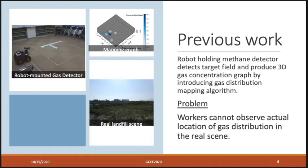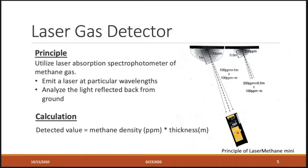The mapping graph is shown in the top right picture. But the problem here is when the workers want to combine the mapping graph and the real landfill scene, it sometimes confuses the workers to find the actual location of the gas distribution, even the gas source position.